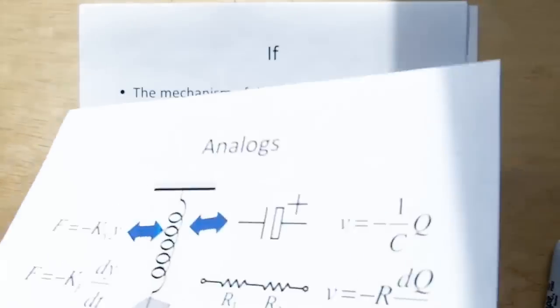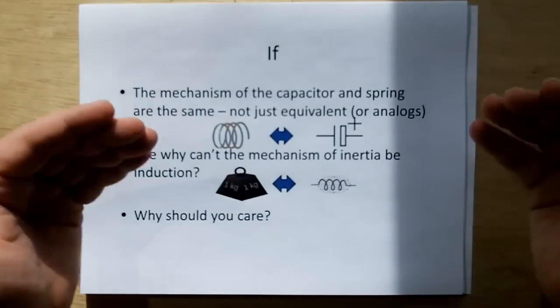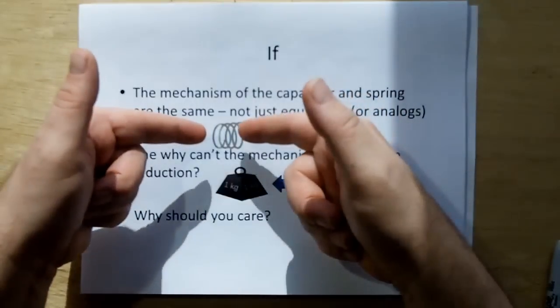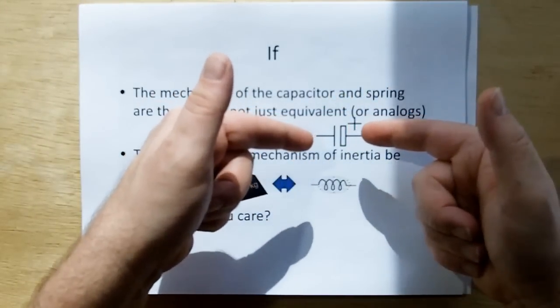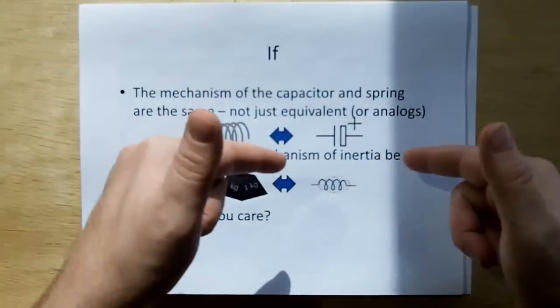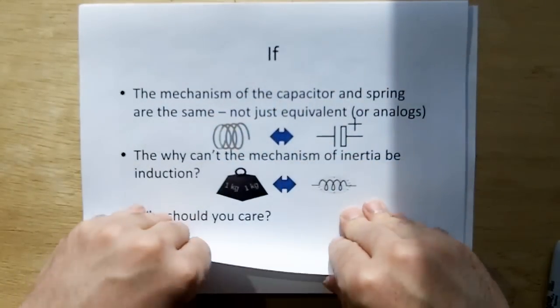Okay, so if the mechanism of the capacitor and spring are the same mechanism, not just analogs, but really the mechanism that makes the spring work is the same exact mechanism that makes the capacitor work, well then I said, why can't the mechanism of inertia be induction? And why should you care about that?